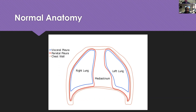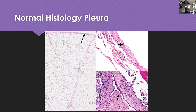The pleural cavity is sometimes obliterated in effusions, empyemas, or mesotheliomas — that space then goes away. I think we have a gross picture of that which also shows the mediastinum. Let's continue ahead and I think we have that picture coming up.